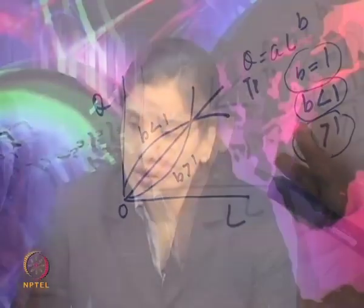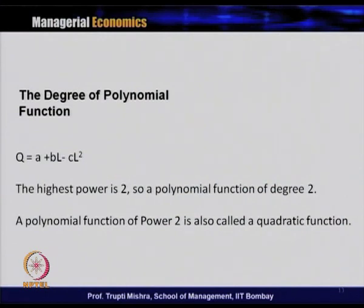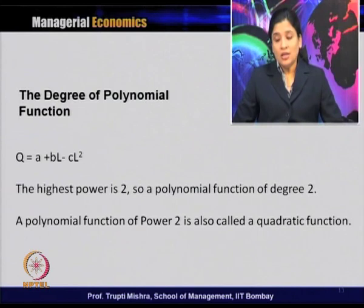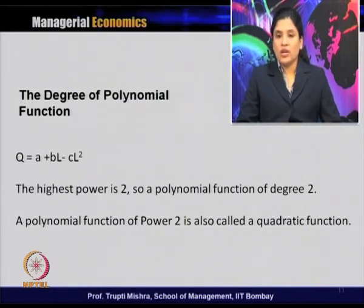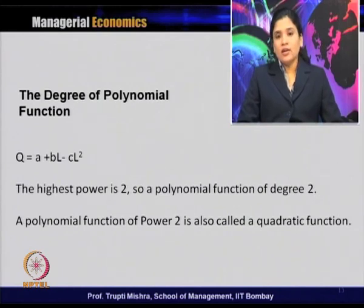Polynomial function can be represented through quadratic, cubic, or power function forms, and each time the graphical representation changes depending on the value of the coefficient. To find the degree of a polynomial function: for Q = A + BL − CL², the highest power is 2, so this is a polynomial function of degree 2, also called a quadratic function.